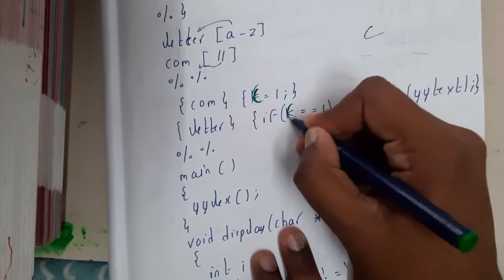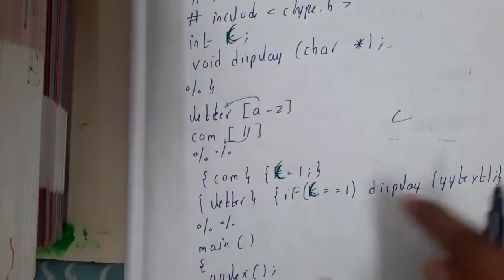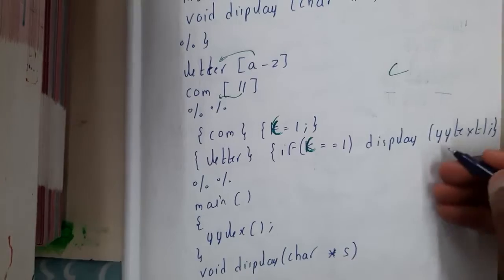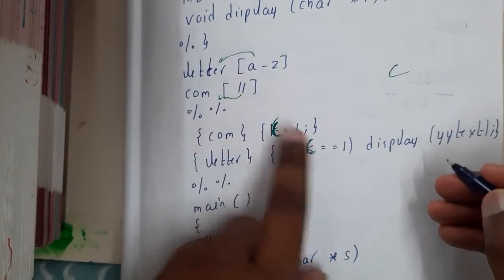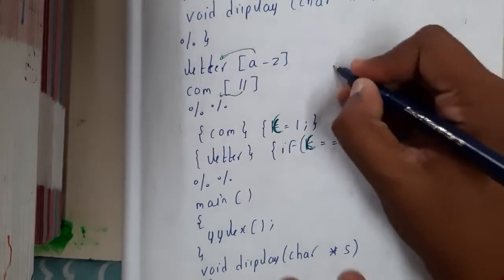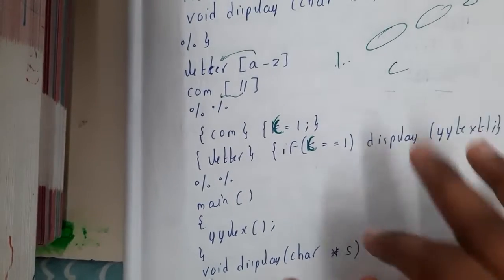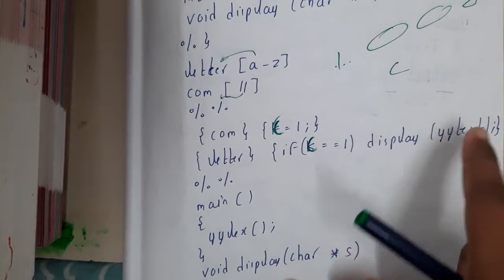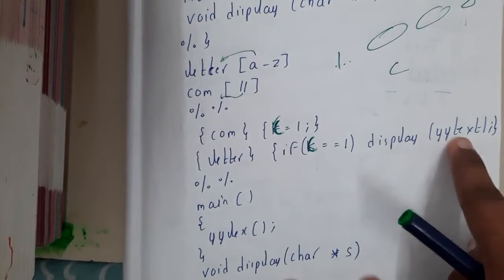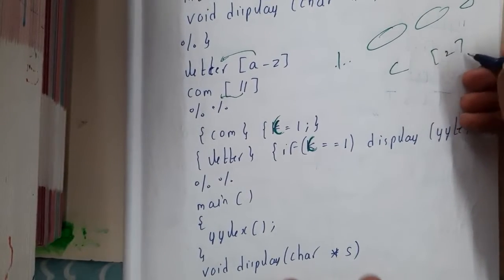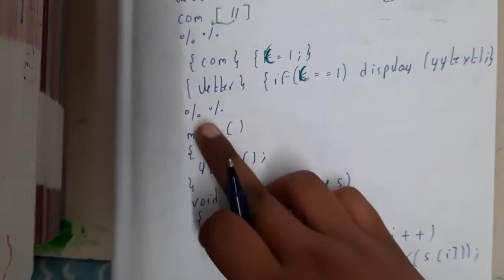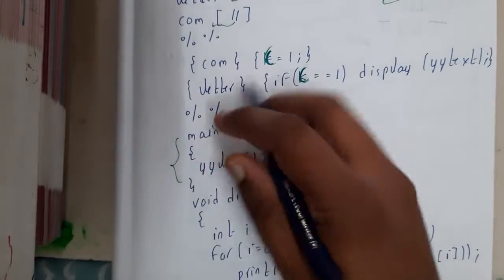When a comment starts, c is set to 1. For letter: if c equals 1, call display(yytext). An important thing to remember: whatever input you give along with ./a.out during execution, that information is stored in the character array yytext. If you want the second value, you access yytext[2] to get the third character. That is why we are calling display(yytext).